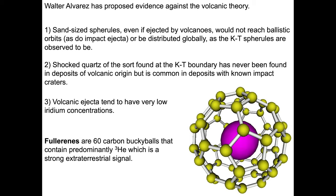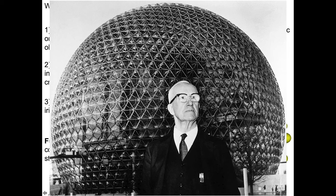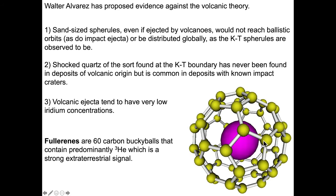Walter Alvarez has proposed evidence against the volcanic theory. Number one: sand-sized spherules, even if ejected by volcanoes, would not reach ballistic orbits as impact ejecta do — because of that, they're not going to be widely distributed. But the KT spherules are widely distributed around the world. Number two: shocked quartz — the kind found at the KT or KPG boundary — has never been found in deposits of volcanic origin, but is common in deposits with known impact craters. Number three: volcanic ejecta tend to have very low iridium concentrations. It was also noted that Buckminster Fullerene's 60-carbon-atom buckyballs contain helium-3, which is more common in outer space than on Earth — they form little cages for this helium-3 atom. This is very likely an extraterrestrial source.